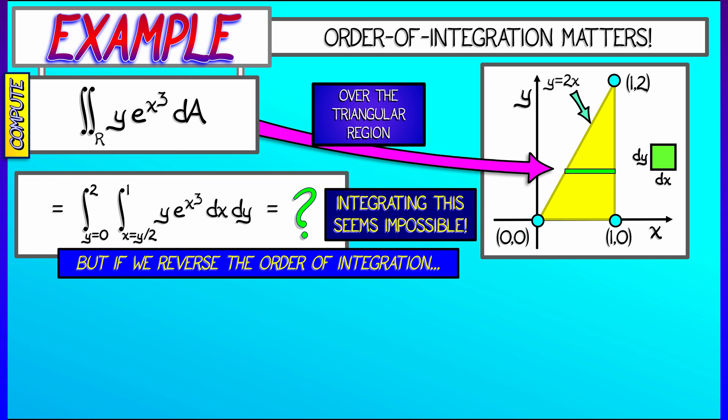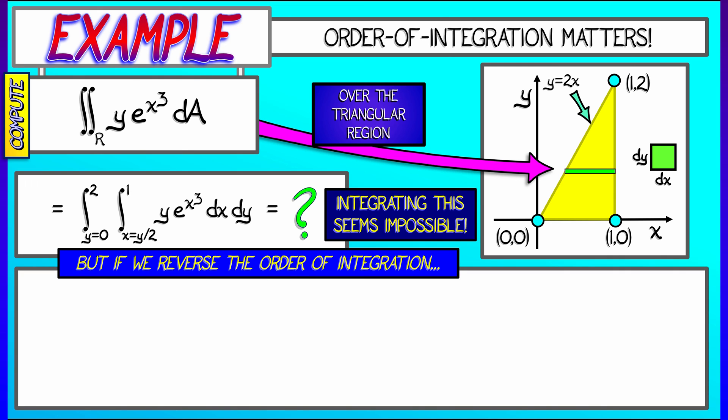Let's set this up as a double integral of y times e to the x cubed dy dx. Now, if I fix x and solve for y, that lower limit is clearly 0. The upper limit we've already solved for that equation, it's 2x. And now, after integrating vertically, we sweep horizontally from x equals 0 to x equals 1.